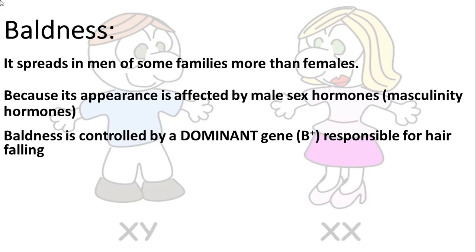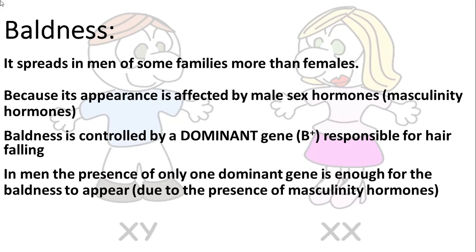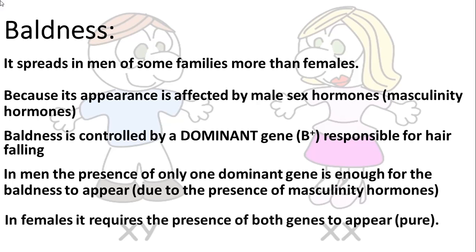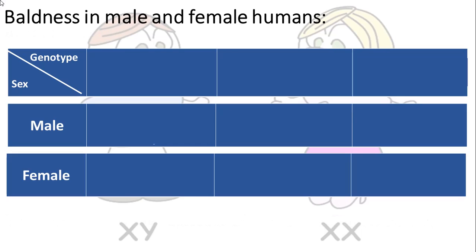Boldness is controlled by a dominant gene which we call B+, responsible for hair falling. We use B+ notation because the dominance is affected by the sex hormone — the same gene can be dominant in men and recessive in women. In men, only one dominant gene is enough for baldness to appear. In females, both genes must be present in pure state, because in the absence of testosterone, the gene is recessive.